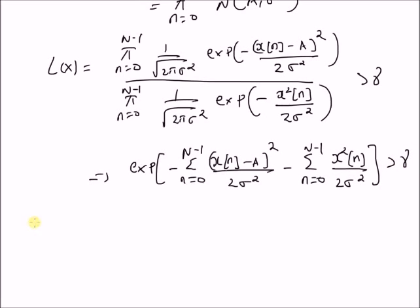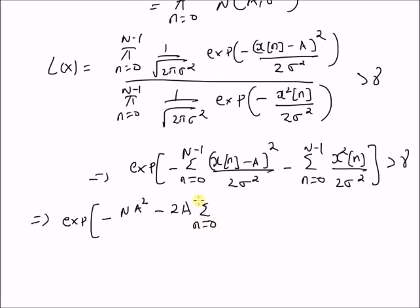Upon simplification, this becomes exp of: the term A^2 repeated N times gives N*A^2, the x(n)^2 terms cancel, and the remaining term is -2A * sum_{n=0}^{N-1} x(n), all divided by 2*sigma^2, and this is greater than gamma.